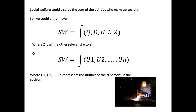Here are two ways of looking at social welfare. The first says that social welfare is a function of quantity of goods and services, distribution of resources, health, leisure, and as many other factors as you can think of that are important. The second says that it is a function of the utilities that make up all of the individuals in a society.